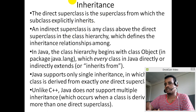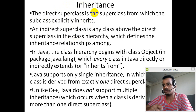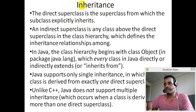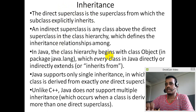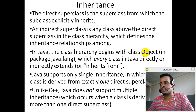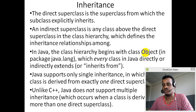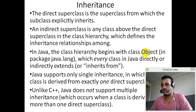This is a hierarchy: we have a subclass and a superclass with a relationship. Every Java class is part of a class hierarchy. Every Java class inherits from the Object class, either directly or indirectly extending Object.